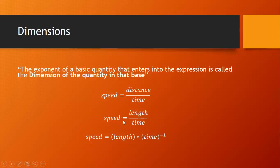We all know speed equals distance by time, and I am writing speed equals length by time. So here the dimensions of speed are 1 in length and minus 1 in time. The dimensions of speed in all other basic physical quantities are 0. While calculating dimensions for any physical quantity, the magnitudes are not considered. It is the equality of the type of quantity that enters — like change in speed, initial speed, final speed, or displacement — all are equal in this discussion.